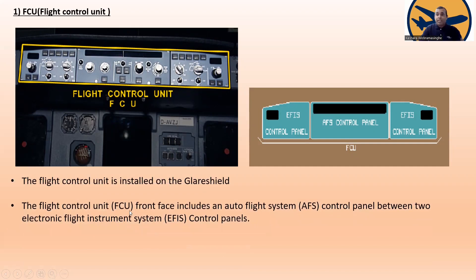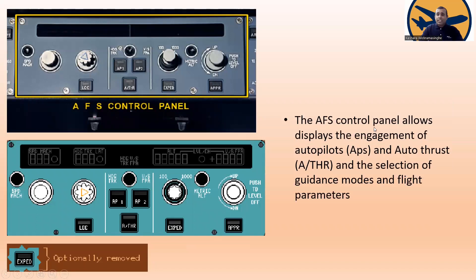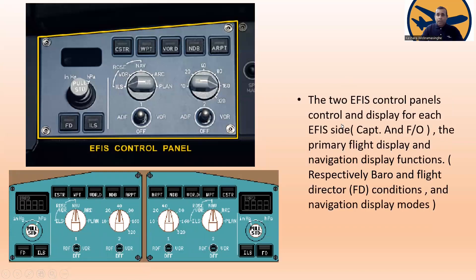The flight control unit front face includes an auto flight system control panel situated between two electronic flight instrument system control panels. Here you can see the auto flight system control panel with autopilot 1, autopilot 2, auto thrust, and the localizer. The auto flight system control panel arms and displays the engagement of the autopilots and auto thrust, and the selection of guidance modes and flight parameters.